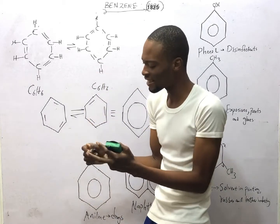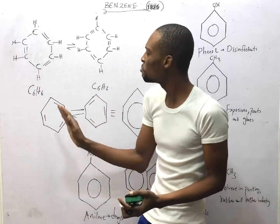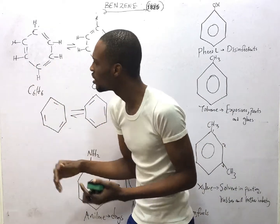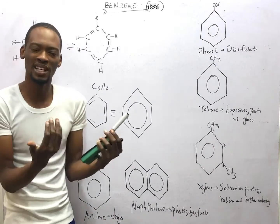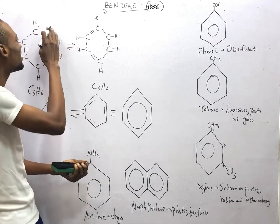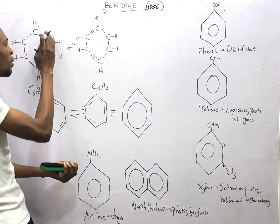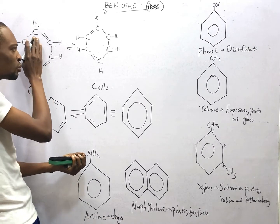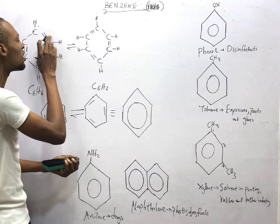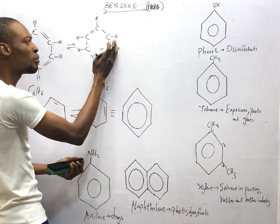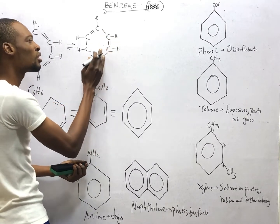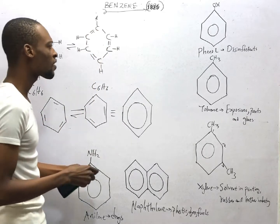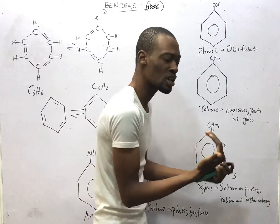August Kekulé says that benzene is a mixture of two forms of compounds in equilibrium, which means benzene contains six carbons and six hydrogens with alternating double bond, single bond, double bond, single bond, double bond, and single bond. It can also begin with single bond then double bond, alternating throughout. This occurrence is referred to as resonance.